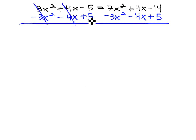And when we do, we're left with zero equals 7x squared minus 3x squared is 4x squared. 4x minus 4x, that's zero, and negative 14 plus 5 is negative 9.